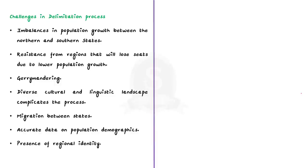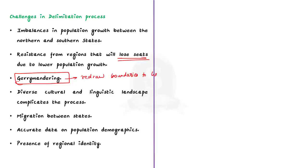There are significant challenges ahead. When boundaries are redrawn, some regions may lose seats because their population did not grow as much, making those states unhappy. Delimitation can also become political, with parties trying to change boundaries to help them win more elections — this is called gerrymandering. India's diverse cultural and linguistic landscape also complicates the process, as political parties often advocate for constituencies based on ethnic, linguistic or religious identities.